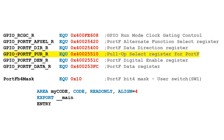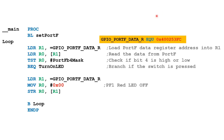Before going further, I'd like to highlight this register — the pull-up select register for Port F, called GPIO_PORTF_PUR_R. More on this subroutine in a few moments. Here is the start of the main program with the symbol __main.